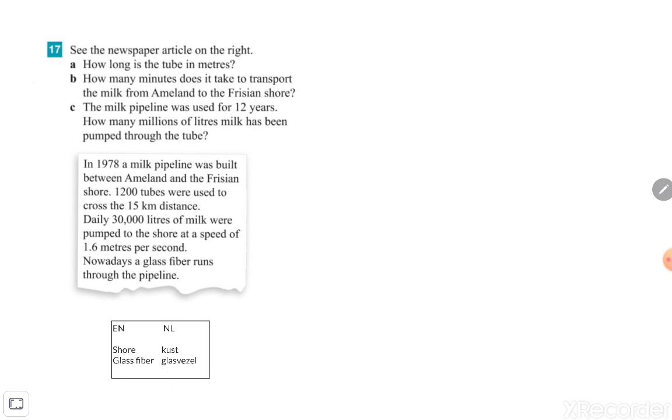Let's just look at the pipeline. Beneath you'll find some maybe difficult words like shore, which is 'kust' in Dutch, and glass fiber, glass vessel. So the article says: In 1978 a milk pipeline was built between Ameland and the Frisian shore.